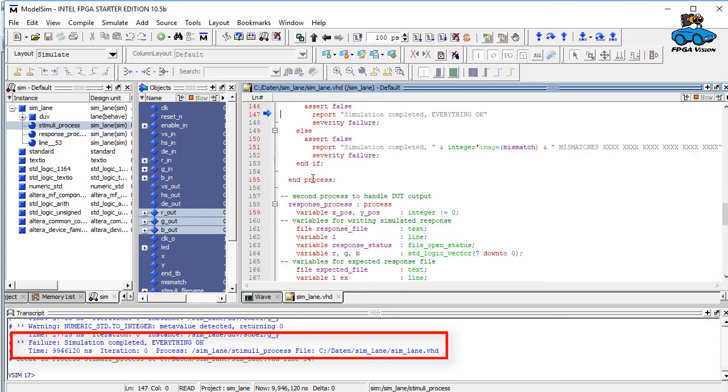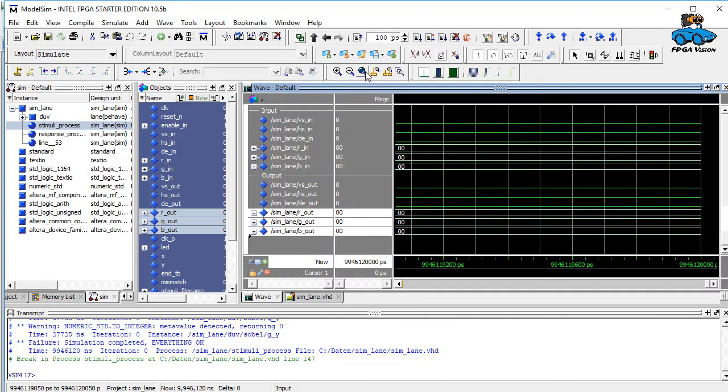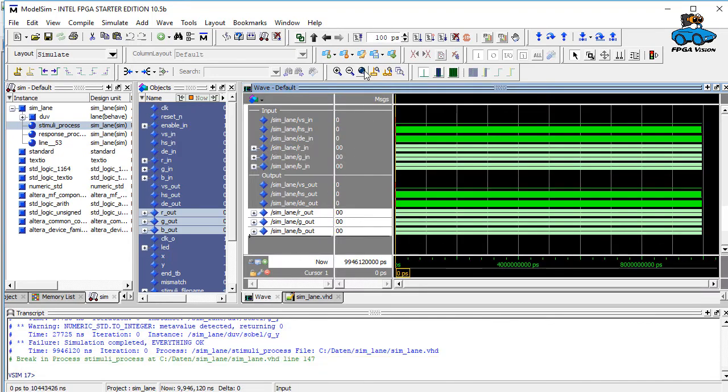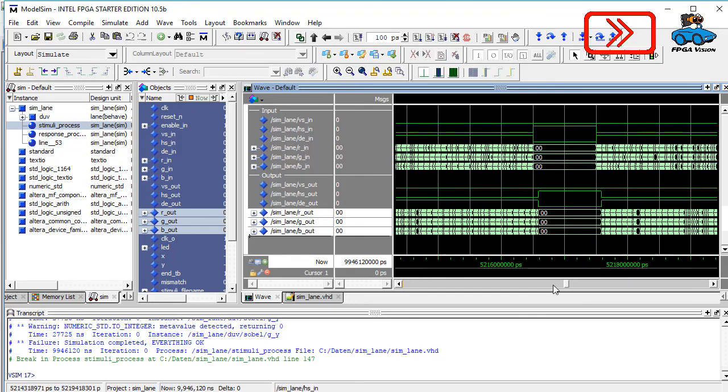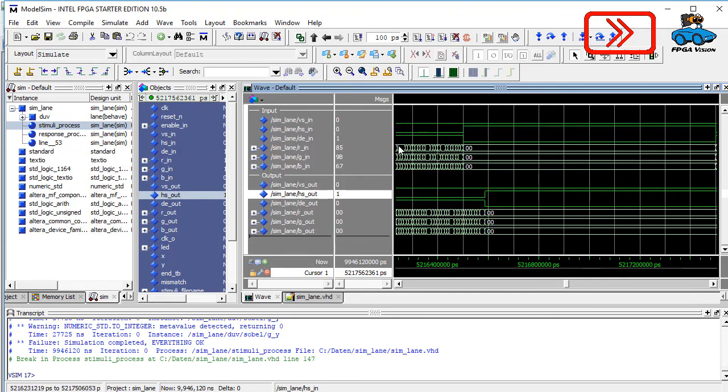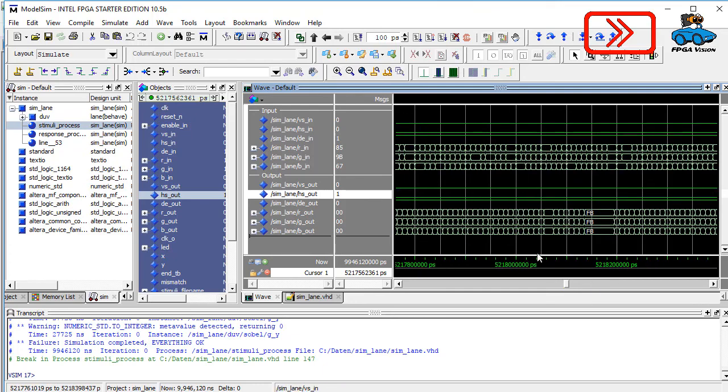The simulated result matches the expected result. We can have a look at the wave signals to see what has been done here. This is the view of the complete simulation. And if we zoom in, we see the individual lines with the sync signal and data enable. This is the beginning of a line.